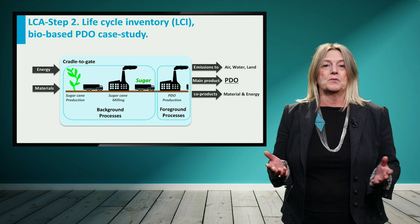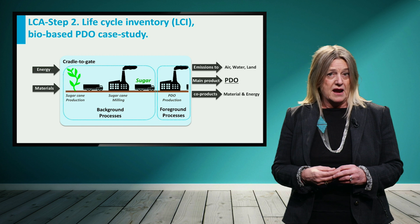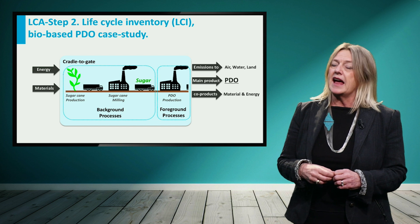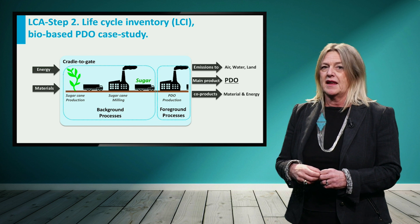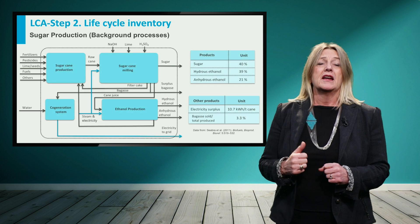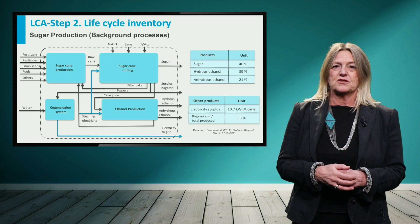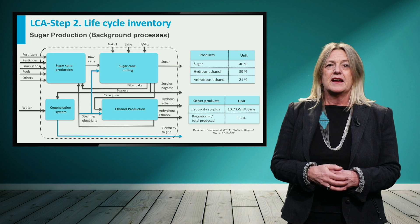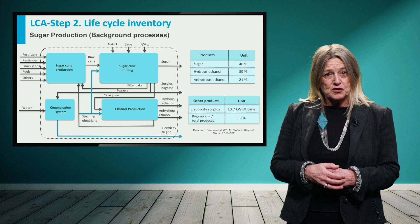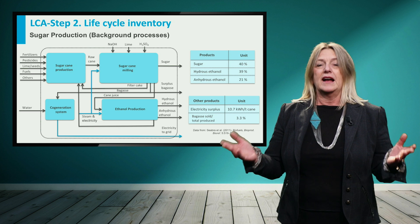Although it is in principle possible to investigate the environmental impact of sugar production from any milling factory, for simplicity in this lecture we will assume the sugarcane production and processing as background system. The average Brazilian sugarcane industry produces five main products, including sugar, ethanol and electricity. For this analysis we use the results reported by Ceabra and colleagues. The Brazilian sugarcane industry is a multi-product system, and in that case the distribution of environmental impacts among the final products becomes an issue. This is called allocation.